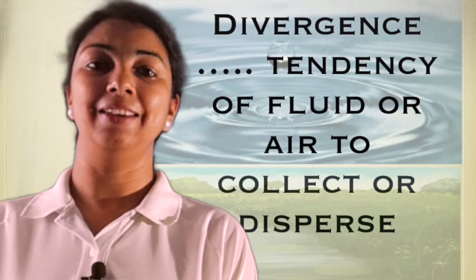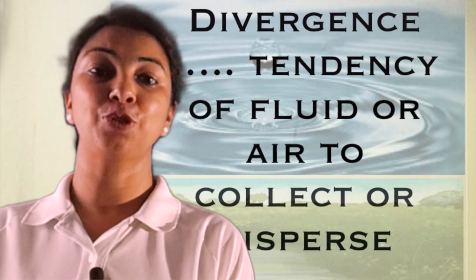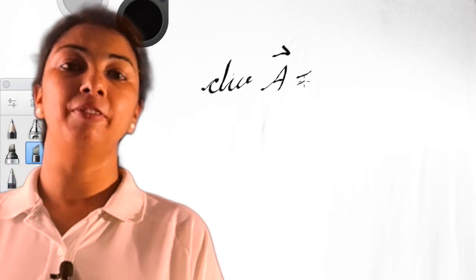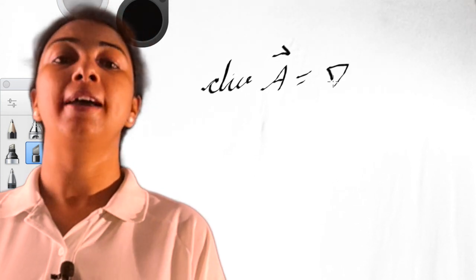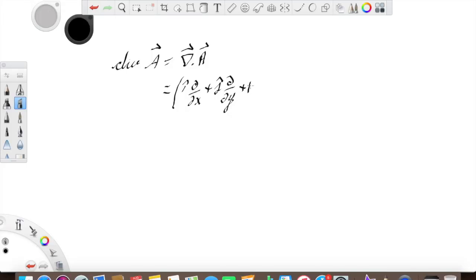In simple words, we can say divergence measures the tendency of a fluid or gas to collect and disperse at a point. Mathematically, divergence can be obtained by the scalar product of del operator and vector field. Here I put the value of del operator and vector field in x, y, z coordinates.